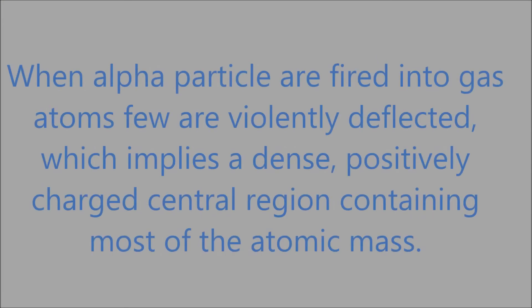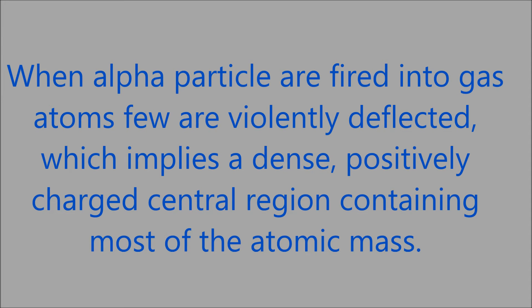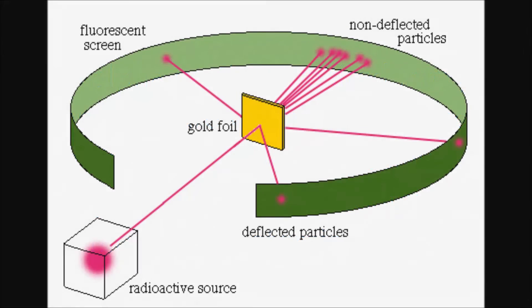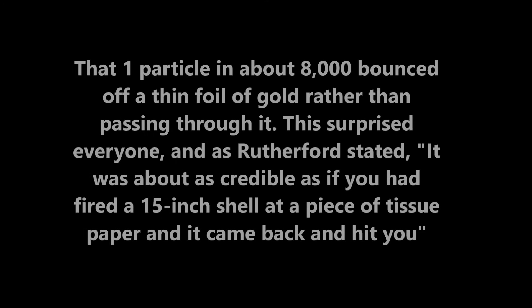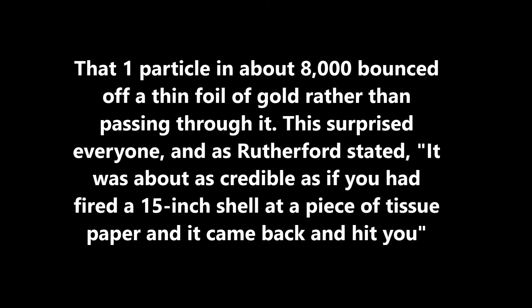Experiments done in Rutherford's laboratory showed that when alpha particles are fired into gas atoms, a few are violently deflected, which implies a dense, positively charged central region containing most of the atomic mass. This was the well-known gold foil experiment, in which it was observed that one particle in about 8,000 bounced off a thin foil of gold rather than passing through it.